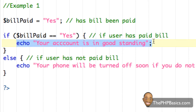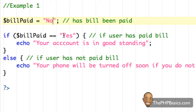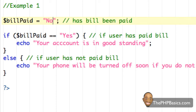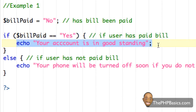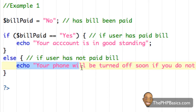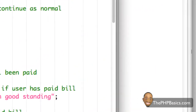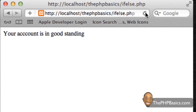However, if we change bill_paid to "No" — or any string different from "Yes" — the next time we reach this if statement, we evaluate the condition and see that bill_paid now contains "No", which is not equal to "Yes". So we skip the if block entirely and go to the else portion and execute that segment of PHP code. Saving it and refreshing the browser, it now displays "Your phone will be turned off soon if you do not pay."